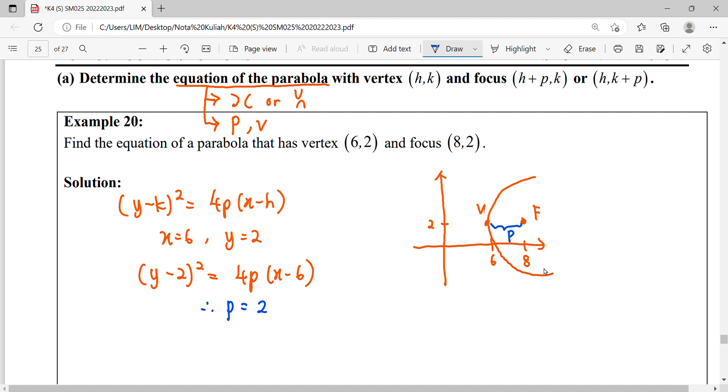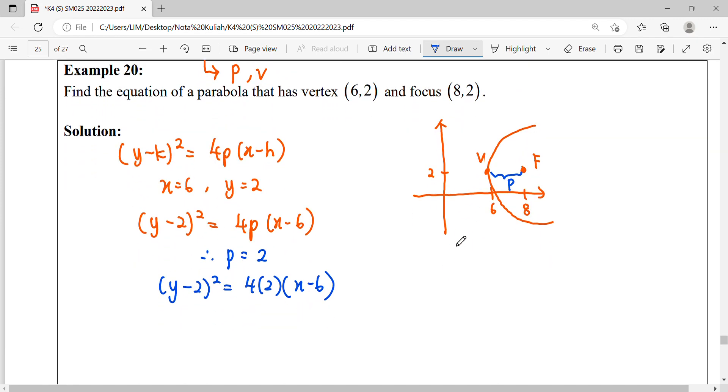So then we substitute into our formula: 4 times 2. So finally, our parabola equation in standard form will be obtained.